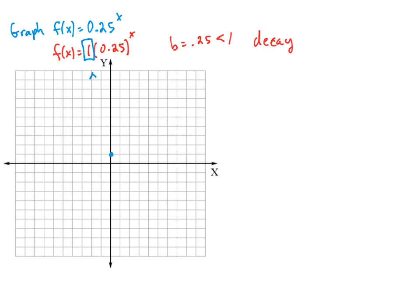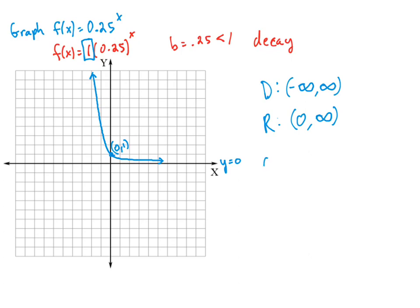So the graph would look something like this — it would pass through the point (0, 1), it would be decreasing, and it would have a horizontal asymptote of y equal to 0. The domain for an exponential function is all real numbers. The range is going to be from 0 to infinity, and it never touches 0. The asymptote is y is equal to 0.